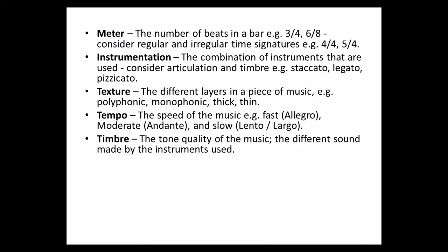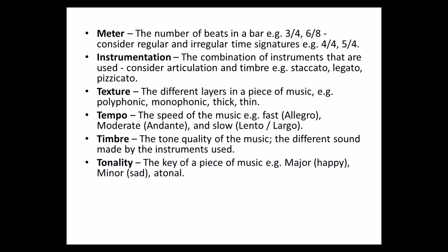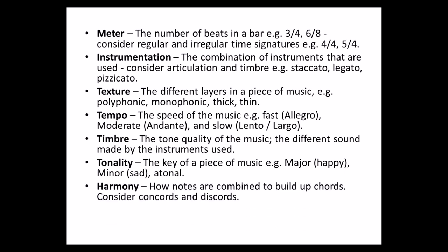Then we have timbre — the tone quality of the music, the different sound made by different instruments. For example, the note A sounds different on a saxophone than it does on a trumpet. Tonality is the key of the piece of music — is it major, which can be happy, or minor, which is sad, or atonal? Then we have harmony — how notes are combined to build up chords. Consider concords and discords.